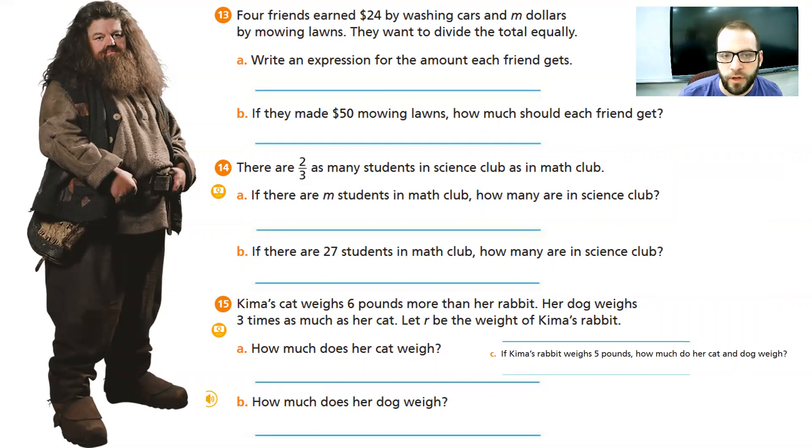So, let's get to it. Let's look at number 13. And if you have your book, I'm going to ask you very politely to make sure you are filling in 13, 14, and 15, because it's going to help your brain really understand this. Number 13 says four friends earned $24 by washing cars, and they've earned an unknown amount, we'll just call it M, when they were mowing their lawns. They want to divide the total equally. Okay? So, write an expression to see how much each friend will get. How many friends are there? Four. So, four total people are splitting the money.